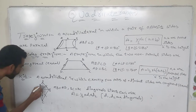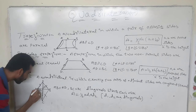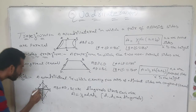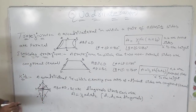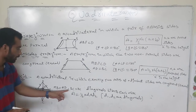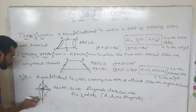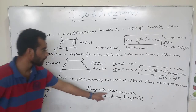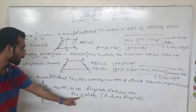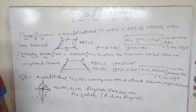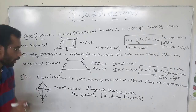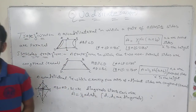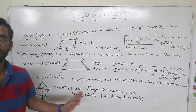The diagonals of a kite bisect each other at 90 degrees, forming right angles on all four sides. The sides AB is equal to AD and BC is equal to DC. The area of a kite is equal to half into D1 into D2, where D1 and D2 are the diagonals.